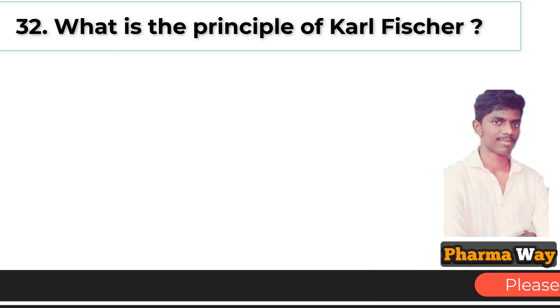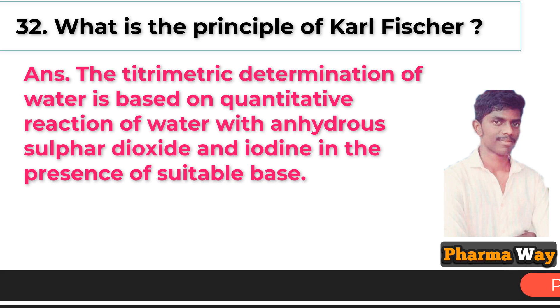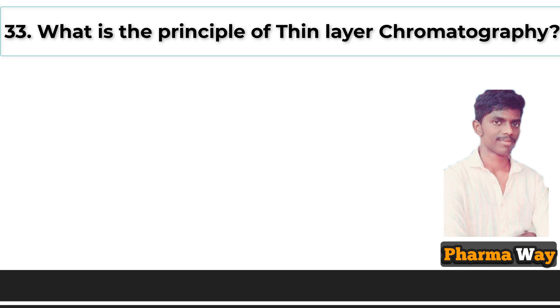What is the principle of Karl Fischer titration? Answer: The titrimetric determination of water is based on the quantitative reaction of water with anhydrous sulfur dioxide and iodine in the presence of a suitable base.